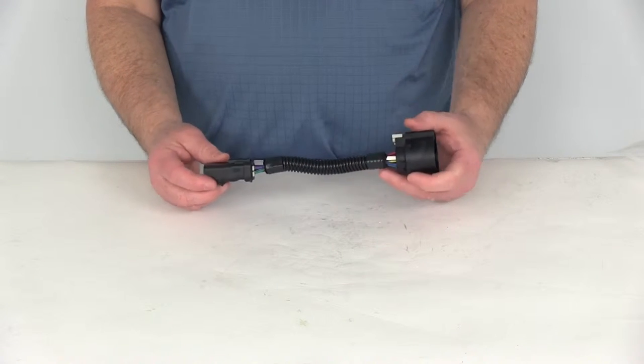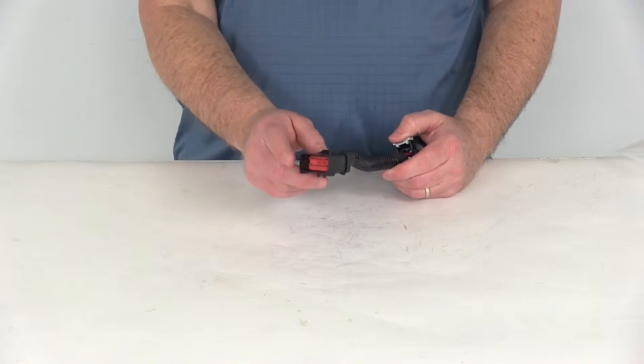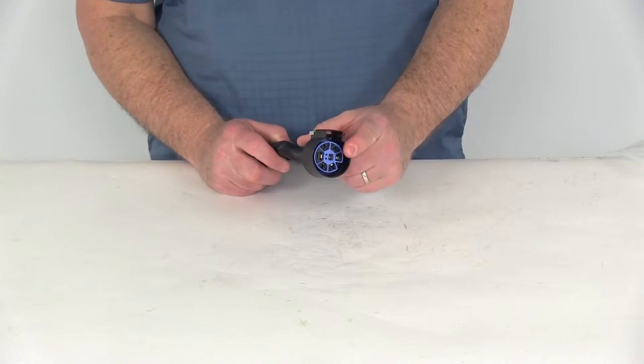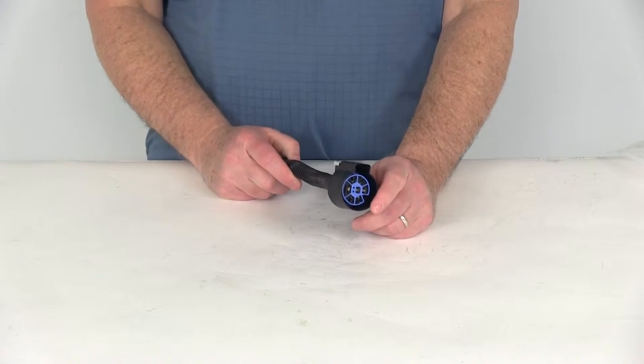This adapter will connect your Dodge or Chrysler OEM wiring harness that uses the rectangular end directly to a Pollock 7-Pole Trailer Connector. We do sell those separately on our website.